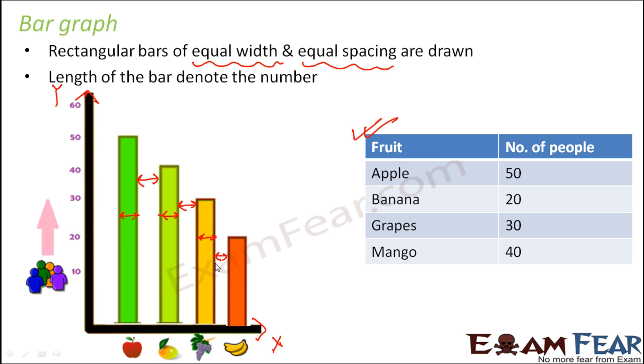Now the most challenging part in a bar graph is to choose the scale. Here you see we have very easily written these numbers like 10, 20, 30, 40, 50, 60, and the numbers are 50, 20, 30, 40, which is the simplest scenario. Now the question is, if we have a table where instead of 50 we have something like 150,000, or if we have a number like 84,000 or 8,400, these are bigger numbers.